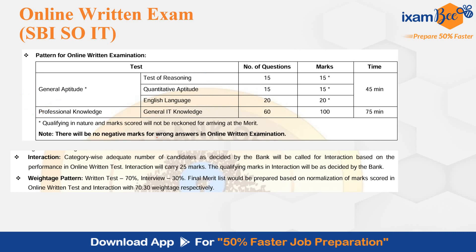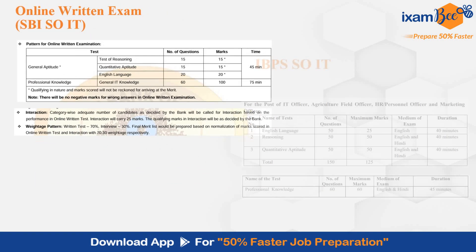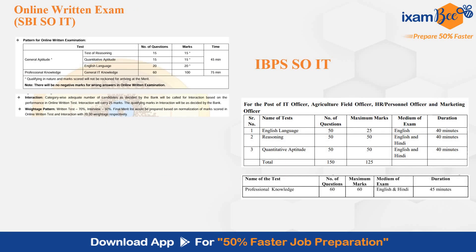At the same time, if you look at IBPS SOIT, the prelims has English, reasoning, and quantitative aptitude. So here the general aptitude — English, reasoning, and quant — is common with the QRE in the prelims of IBPS SOIT. So you can prepare general aptitude together for both.